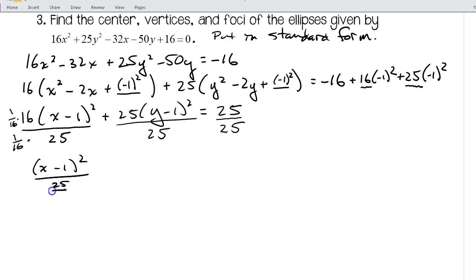So the 1/16 and the 16 cancel out, so I'm left with (x - 1)² over 25/16. Now this does look ugly, but when I take the square root it'll just be 5/4. And then these both cancel out, so I'm left with (y - 1)² over 1. We always want to have a denominator, and it equals 1.